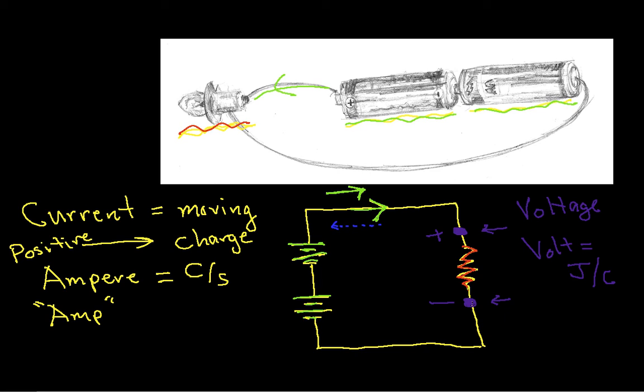One volt represents a potential difference that if you take one coulomb of charge and move it through that potential difference, it will either require one joule to do it if you're moving against the potential difference, or you'll get one joule out if you're moving with the potential difference. So that's the idea behind voltage and current.